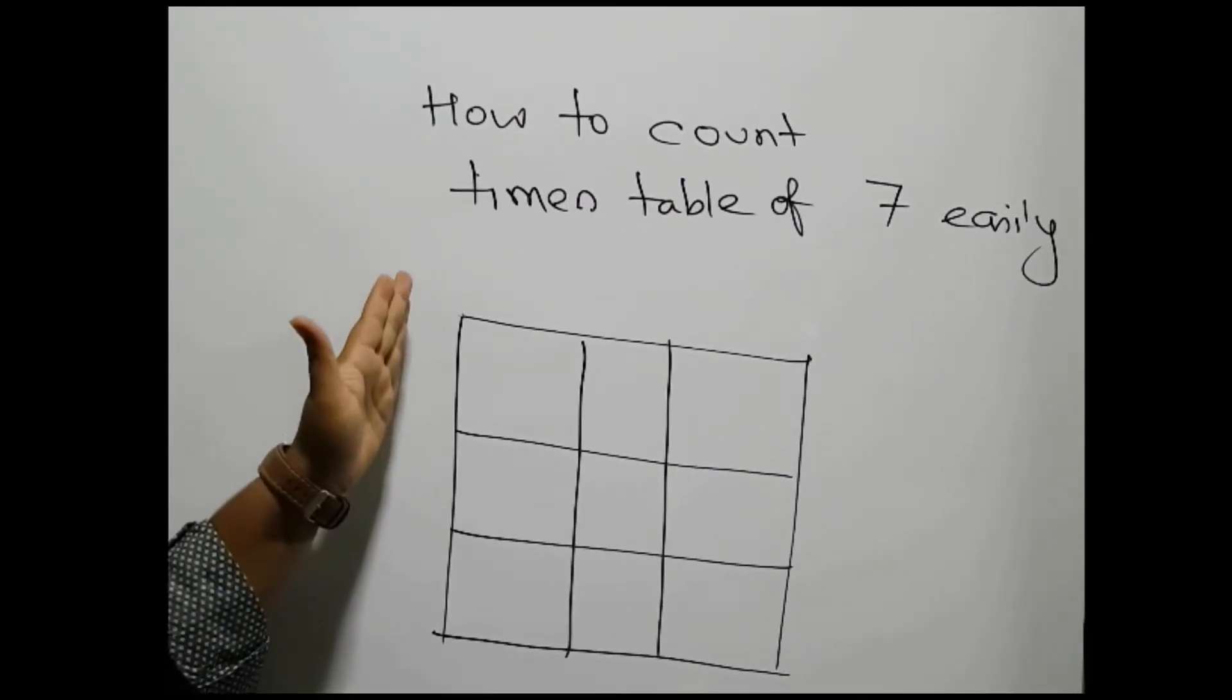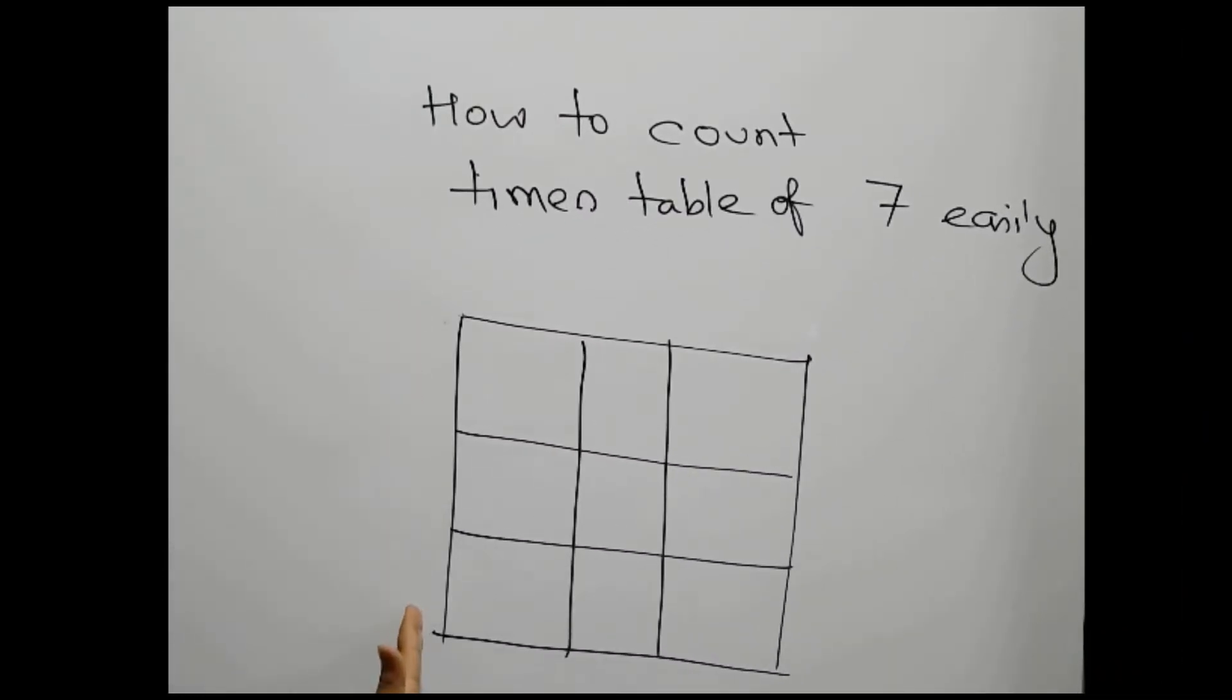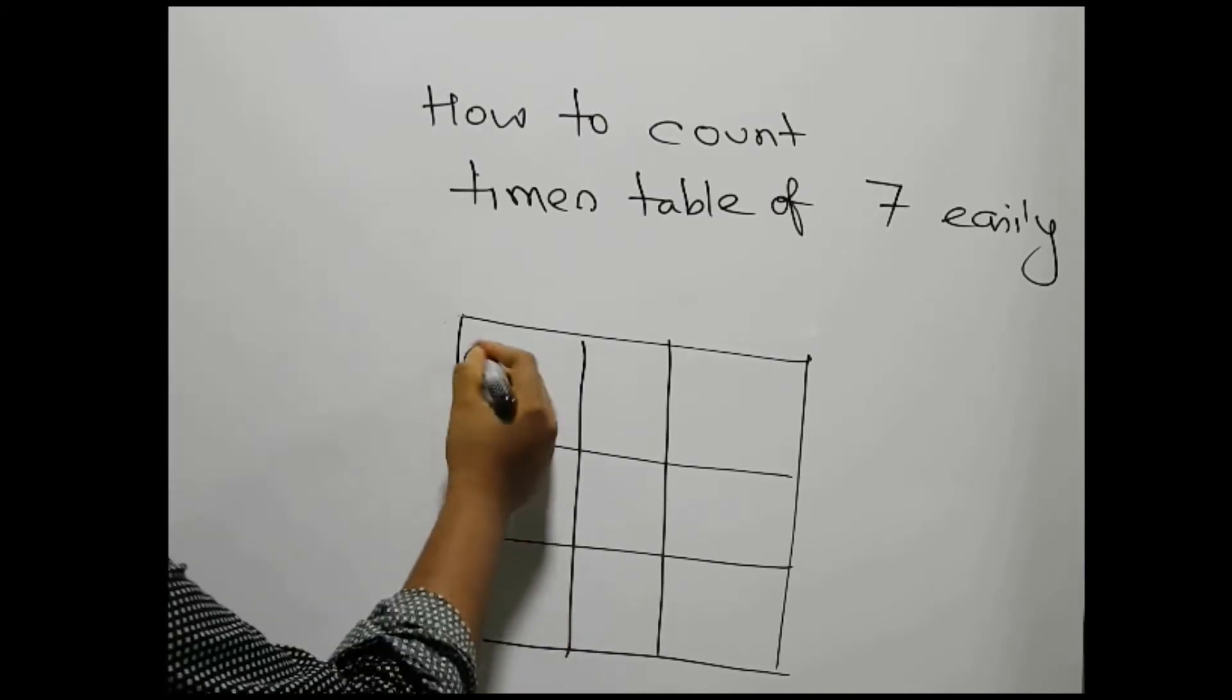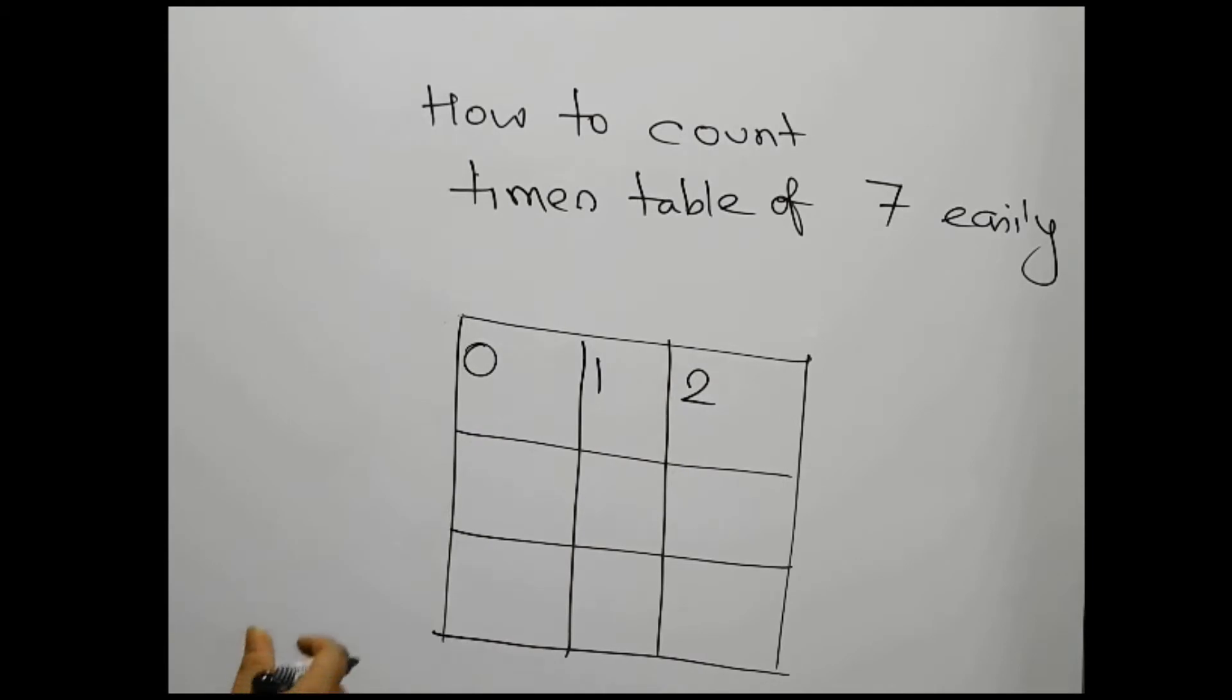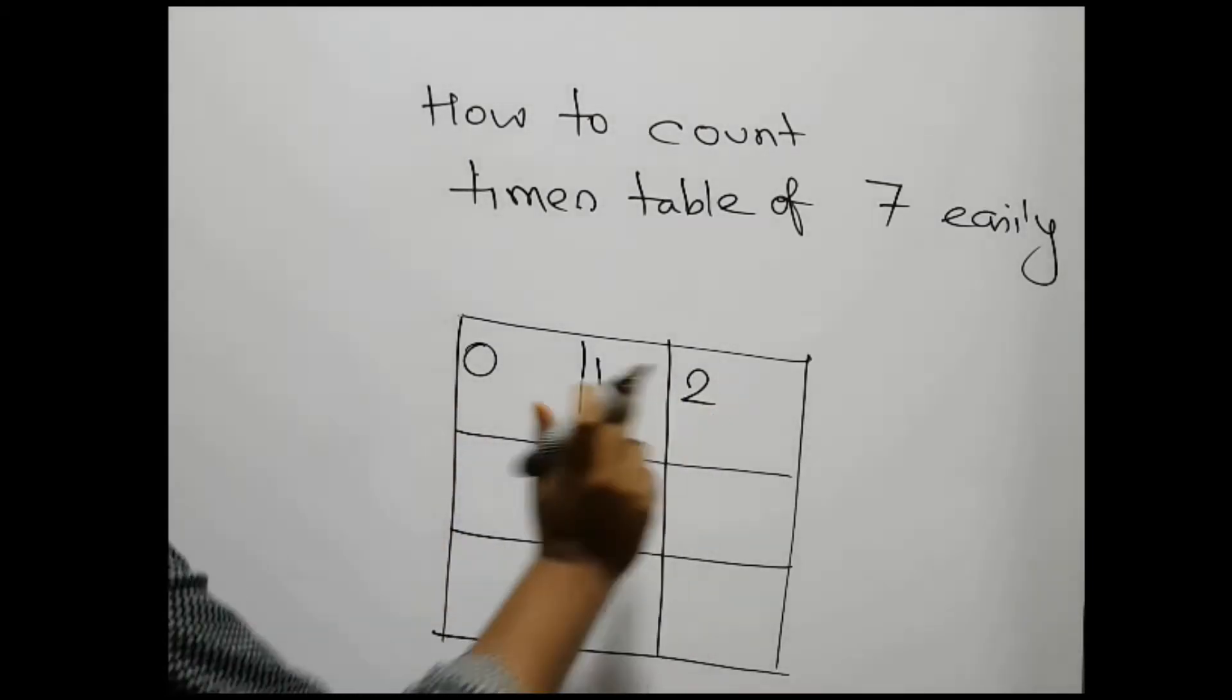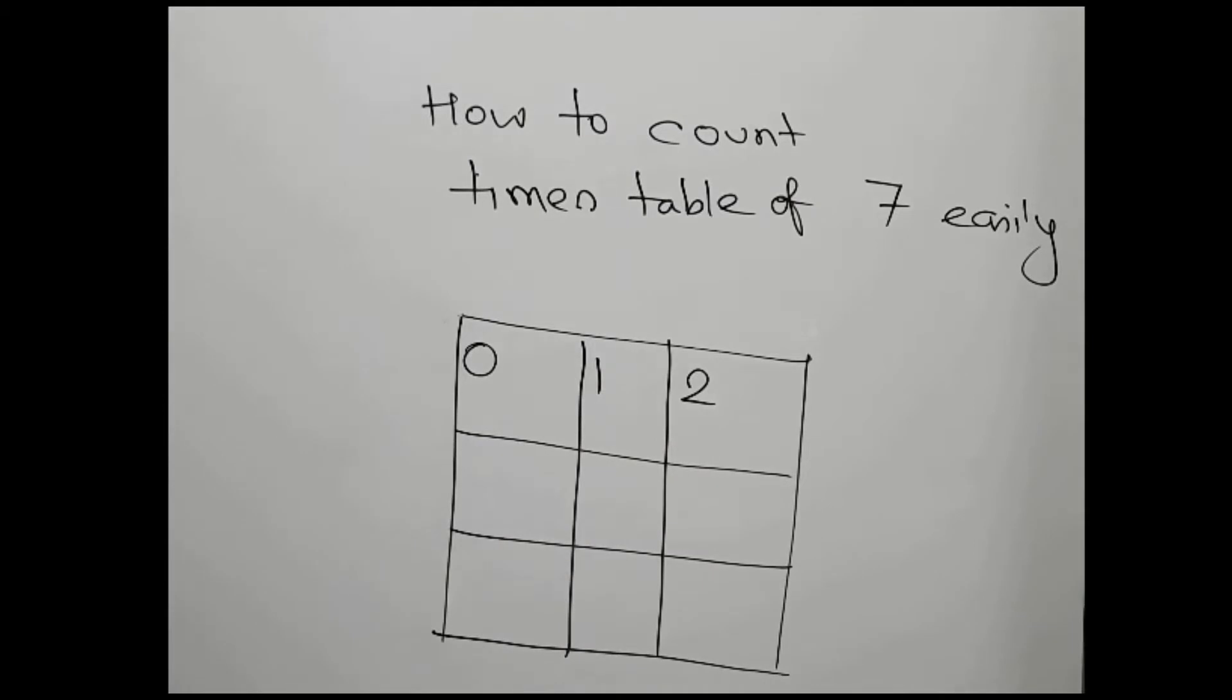First, we draw a 3 by 3 table - there will be 9 squares. We write down 0, 1, 2 in the first row. We see the first row ends with 2, so we start with 2 again in the next row.